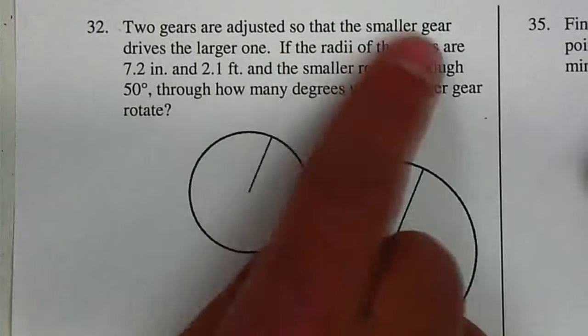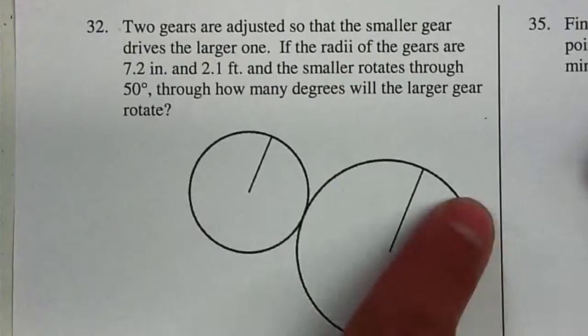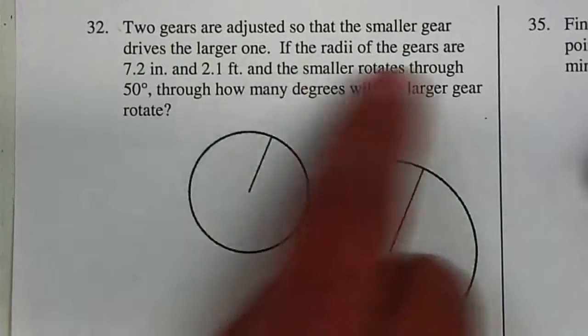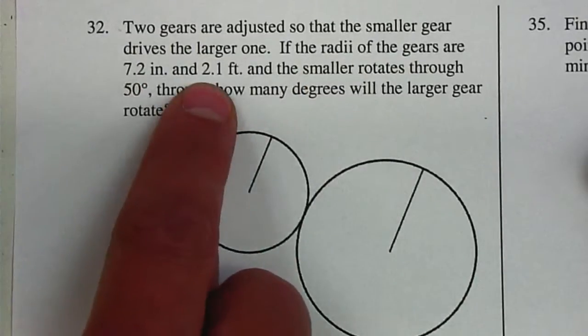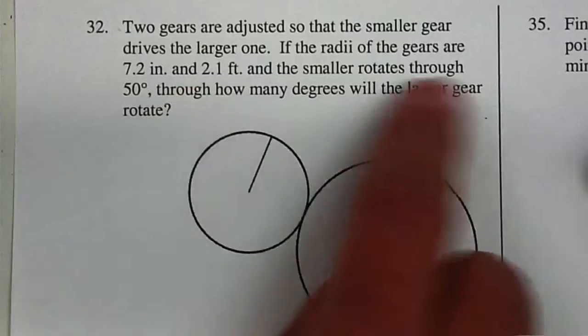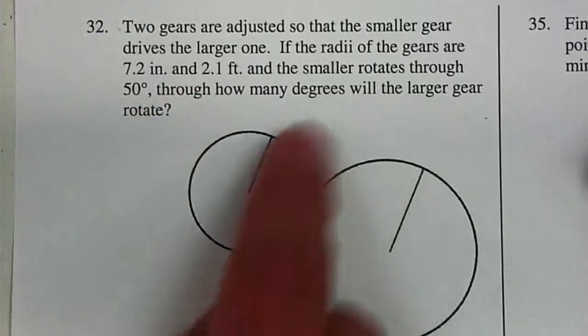Two gears are adjusted so the smaller gear drives the larger one. We have a smaller gear and a larger gear. If the radii of the gears are 7.2 inches and 2.1 feet, and the smaller one rotates through 50 degrees, through how many degrees will the larger one rotate?